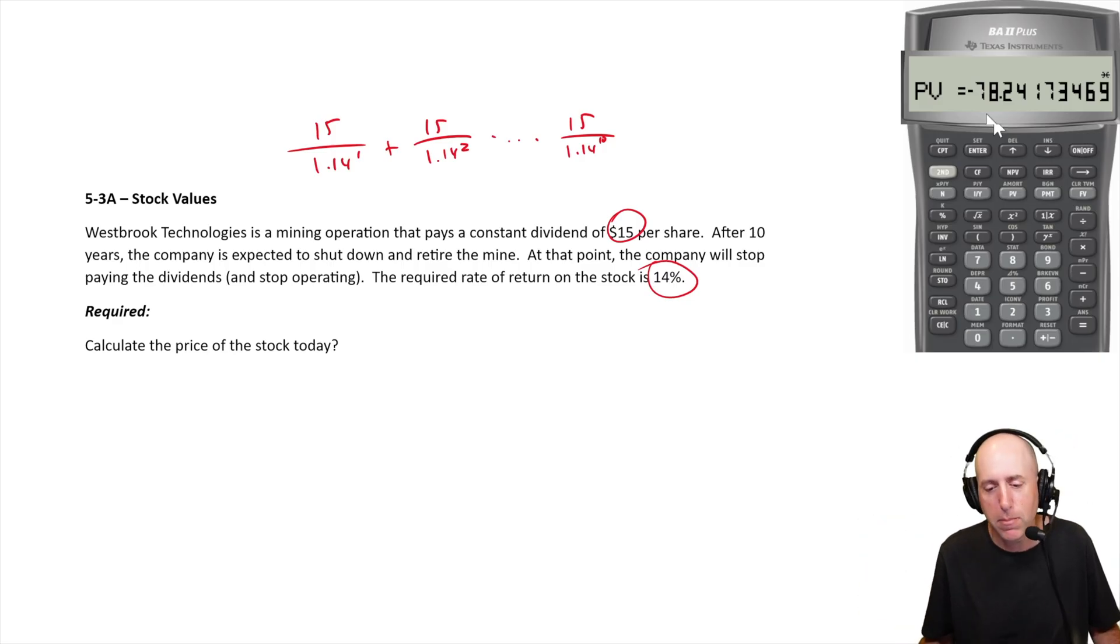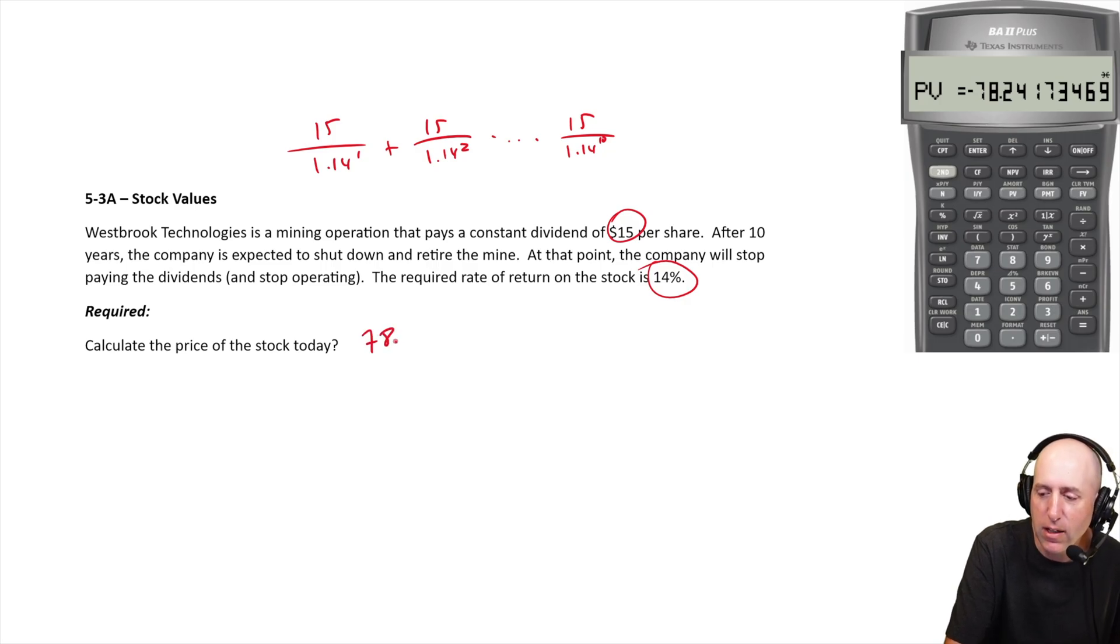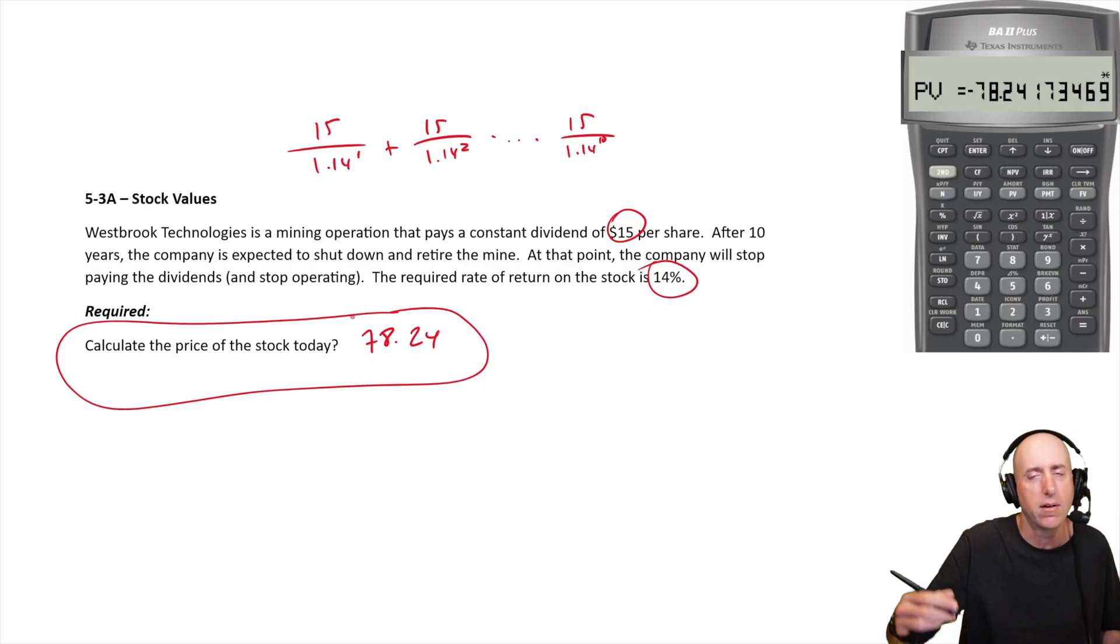I compute the PV. If I wanted a stock that would pay me a $15 dividend for the next 10 years with a 14% discount rate, the value of those future cash flows is $78.24. So that's the value of the stock today or an appropriate price to pay for that stock today.